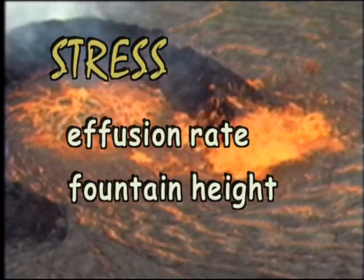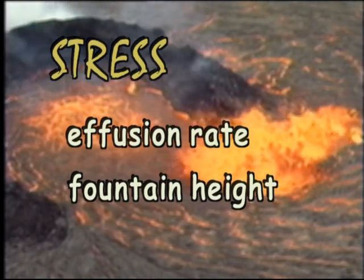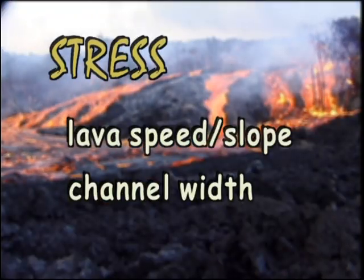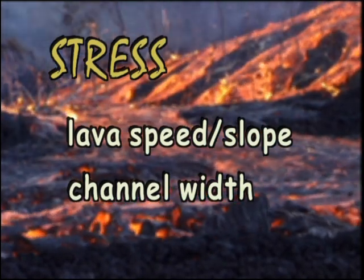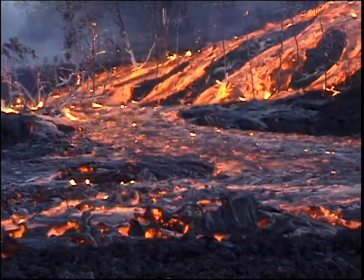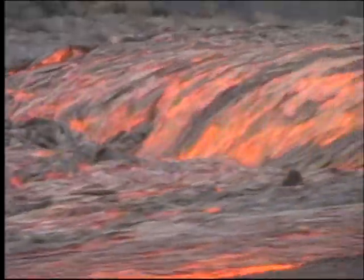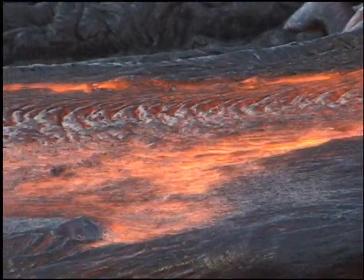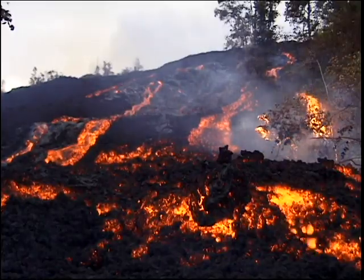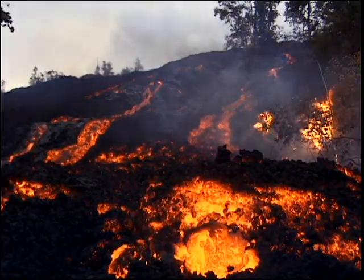How much lava is coming out of the ground, called the effusion rate, how high it goes in the air, and how steep a slope it flows down — all influence the shear stress and the type of lava formed. Lava moving rapidly down a steep slope or in a wide channel is stressed much more than lava moving slowly on flat ground. The faster lava flows, the more it is being torn, the more likely it is to become A-A.